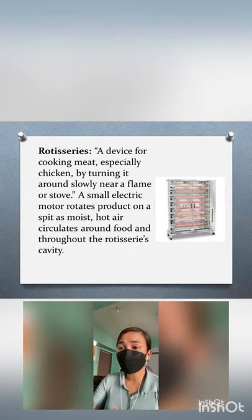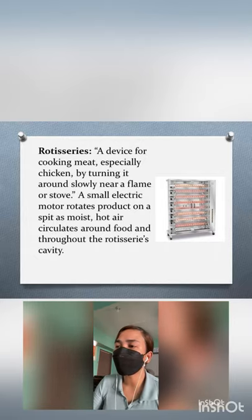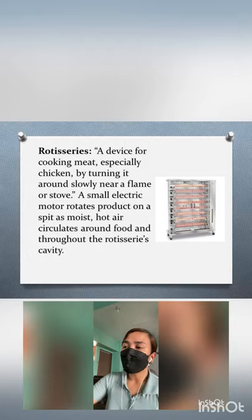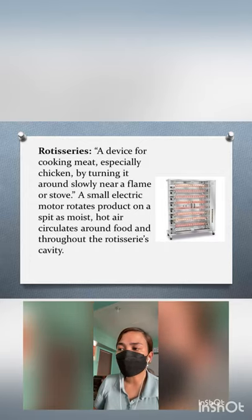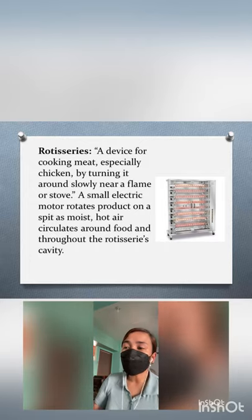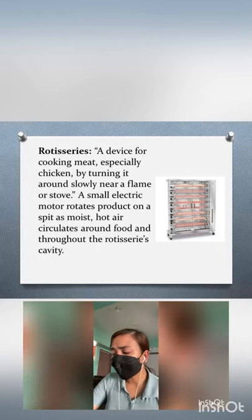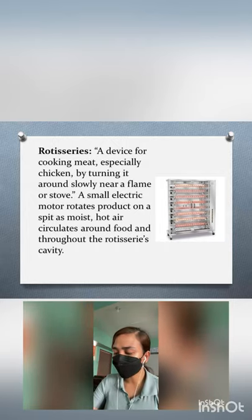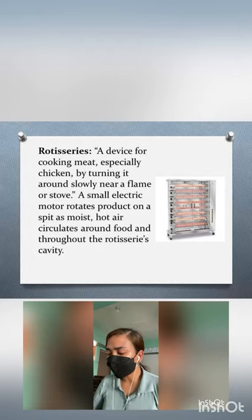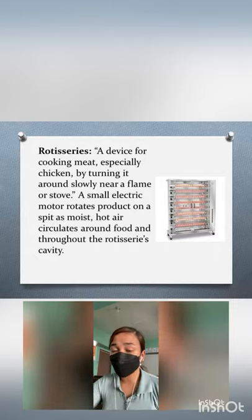Next, we have the rotisserie. It is a device for cooking meat — especially chicken — by turning it slowly near a flame or heat source. A small electric motor rotates the product on a long skewer or metal rod. Hot air circulates around the food throughout the rotisserie's cavity. As the spit rotates, it cooks the meat evenly and the meat is constantly basting in its own juices.